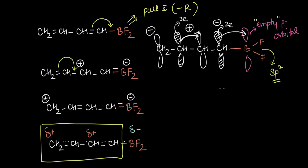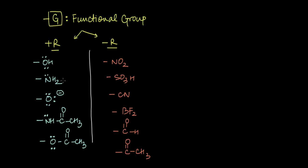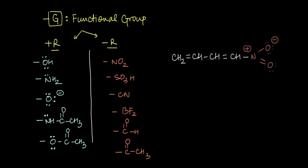The condition for a group to be -R is that it needs to have an empty orbital, which can withdraw electrons from an adjacent pi bond. BF2 clearly has an empty orbital. However, other groups like NO2, SO3, and similar groups do not explicitly have an empty orbital. For example, NO2 attached to a carbon chain doesn't have an empty p orbital — it instead has a pi bond between the nitrogen and oxygen atoms.